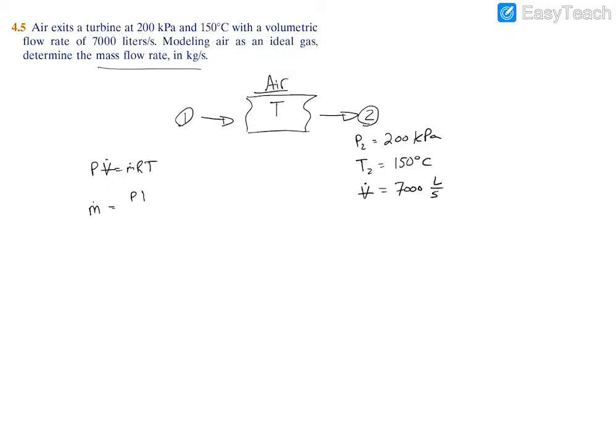The target is M dot which is going to equal the pressure times the volumetric flow rate divided by the gas constant times the temperature. It's pretty simple, we just need to plug and chug. We set this equal to 200 kilopascals on the pressure, and that's already in SI so we're good to go.